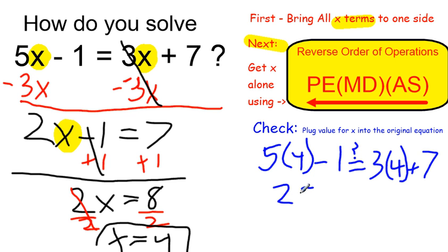5 times 4 is equal to 20. So on the left I have 20 minus 1. On the right, 3 times 4 is 12, and I have 12 plus 7.